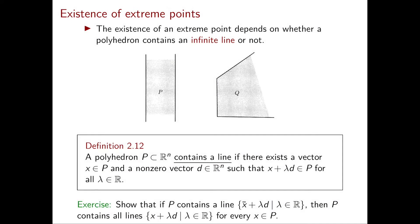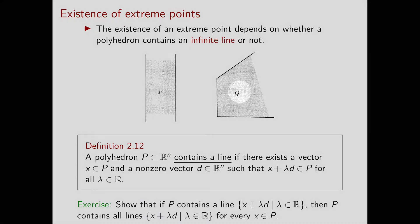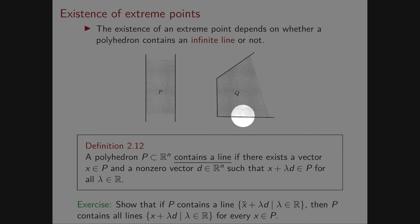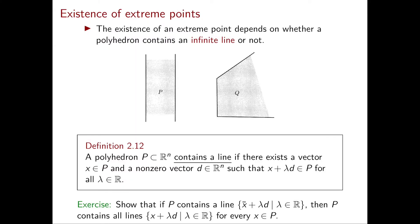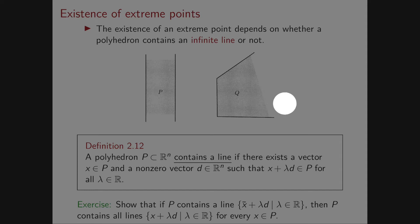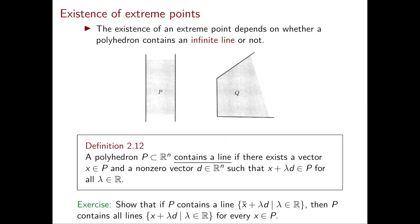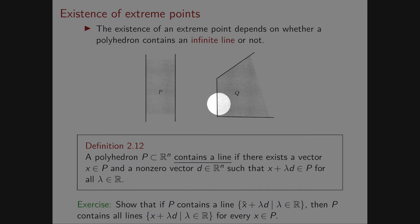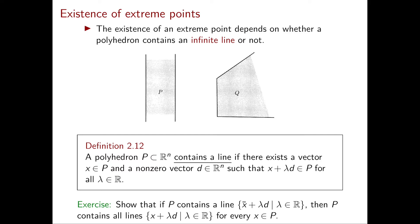On the other hand, the polyhedron Q on the right clearly doesn't contain any line. No matter how hard you try, you will never find a line fully contained in Q. For example, a vertical line will exit Q both at the bottom and at the top. A horizontal line does better — on the right side it stays contained in Q — but on the left it eventually exits. Of course there are not just vertical and horizontal lines; you should try any possible slope, but our intuition tells us that Q doesn't contain any line.